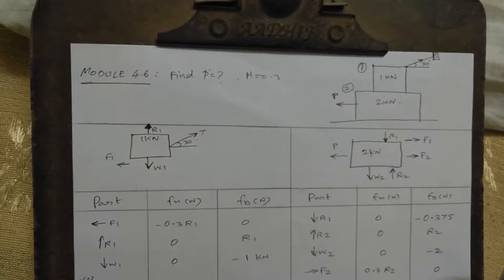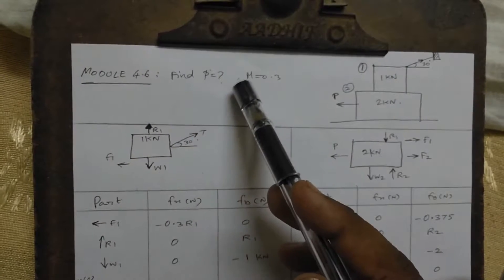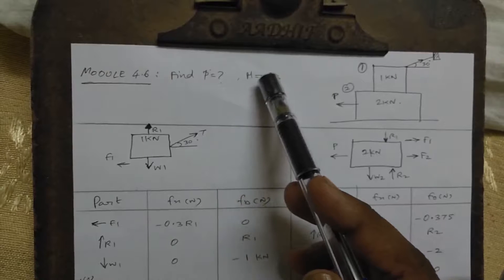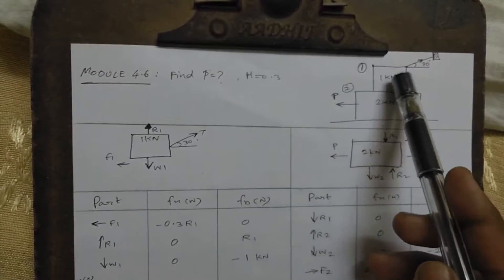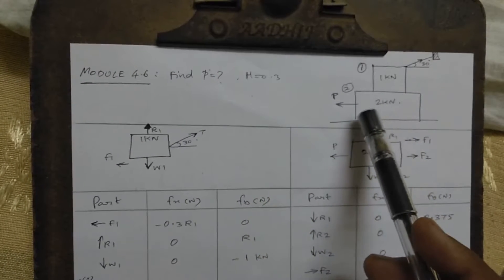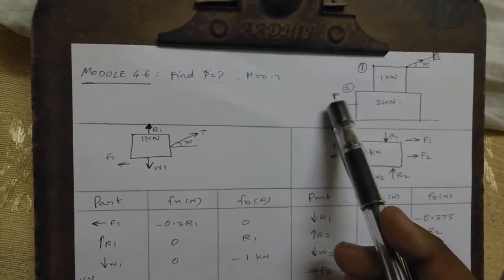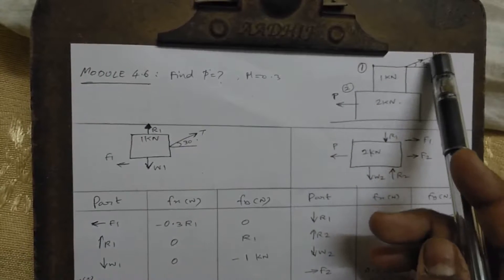Welcome to Model No. 4.6. Find the value of P by taking coefficient of friction 0.3. There are two blocks: 1 kN and 2 kN, carried by a load capital P and a string.